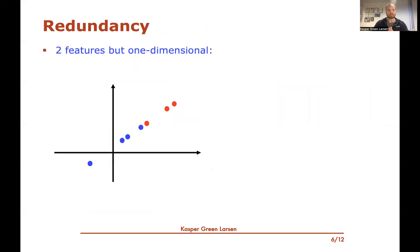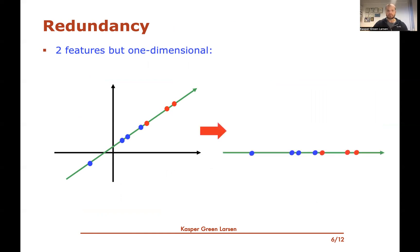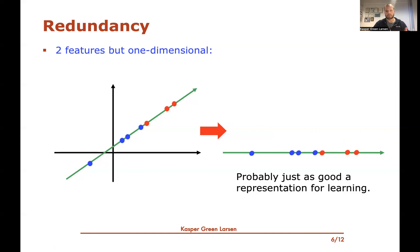The miles-per-hour versus kilometers-per-hour setup corresponds to: if you plot those two features of your training samples, you'll see a linear dependency among them — one is always a scaling of the other. You could draw a line through the data; looking at just these two features, the data is actually only one-dimensional even though it has two features. For learning, you might as well use this one-dimensional representation, using the position along this green line as your single feature, which should capture all the same information.